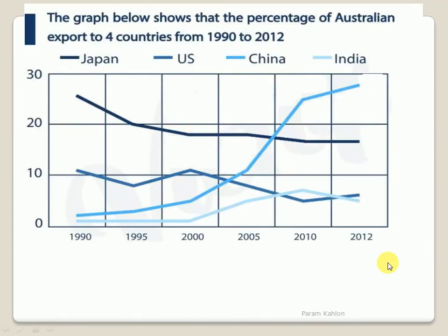Here is a chart which has 4 countries — Japan, US, China and India — which are exports from Australia. It is starting in billion dollars.